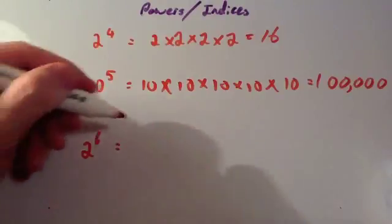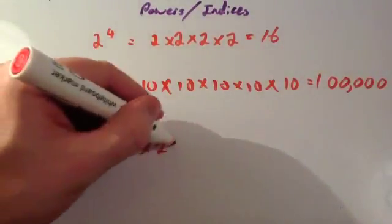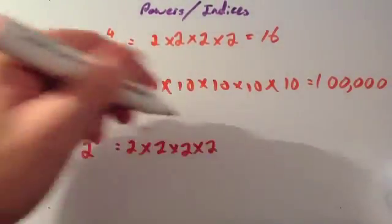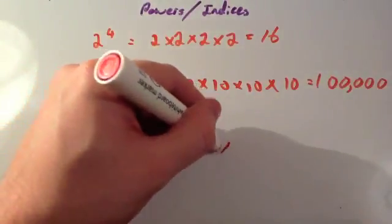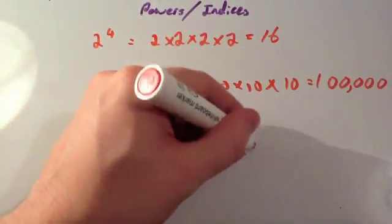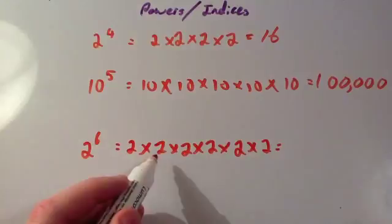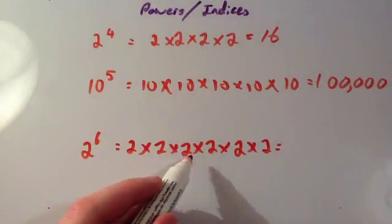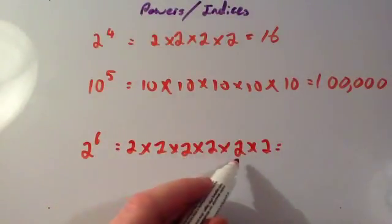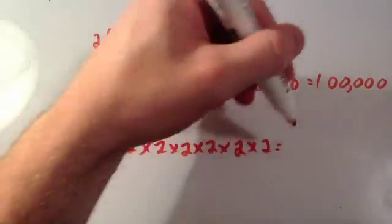2 to the power of 6 means 2 times 2 times 2 times 2 times 2 times 2 — six of them. So: 2 times 2 is 4, times 2 is 8, times 2 is 16, times 2 is 32, times 2 is 64.